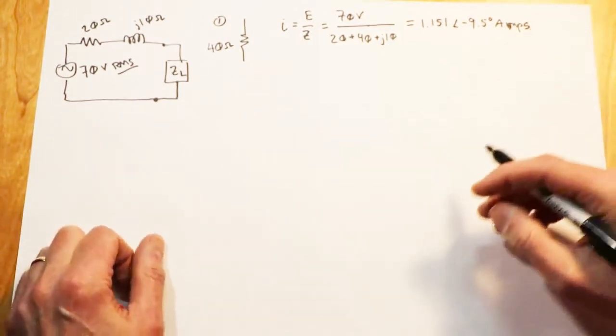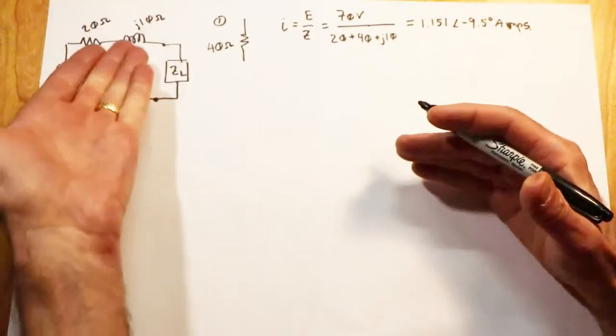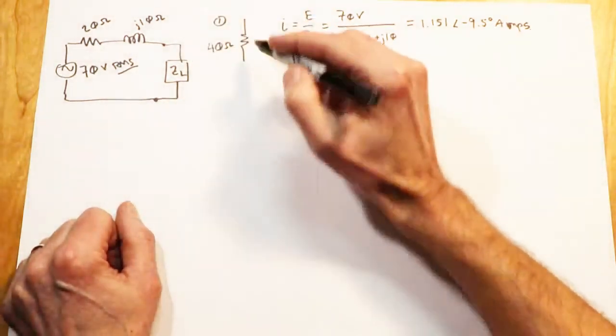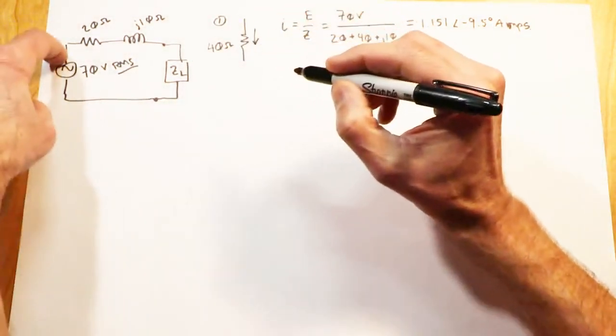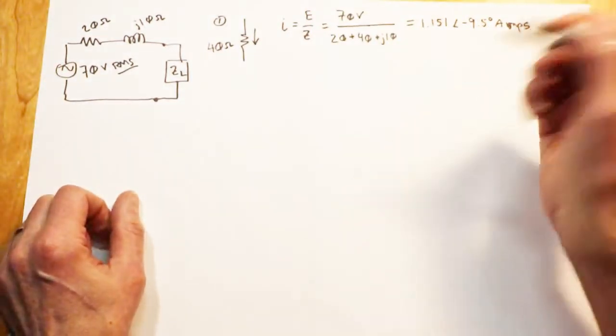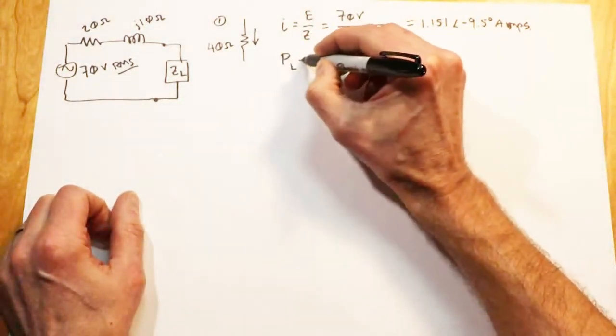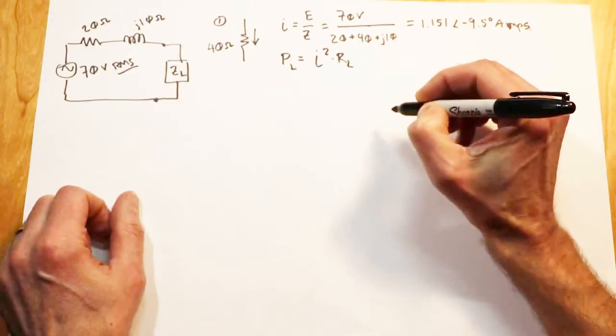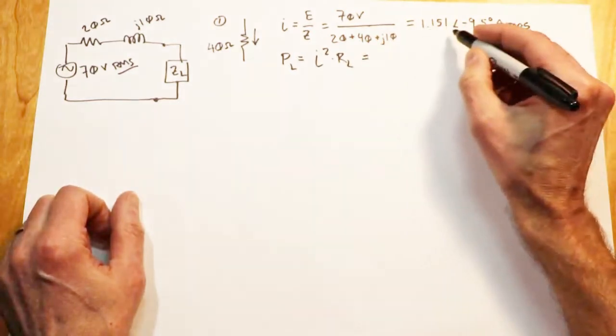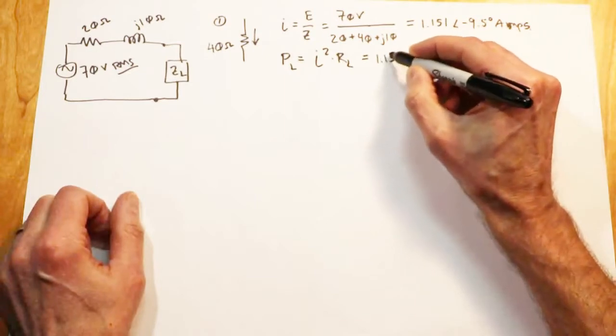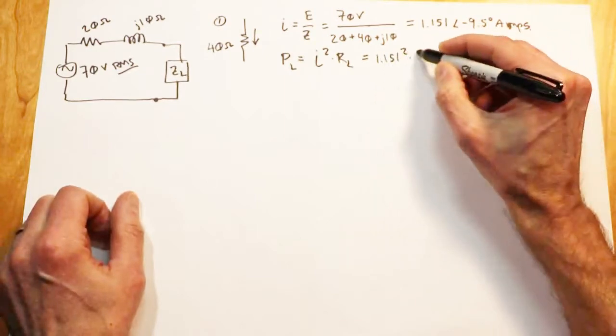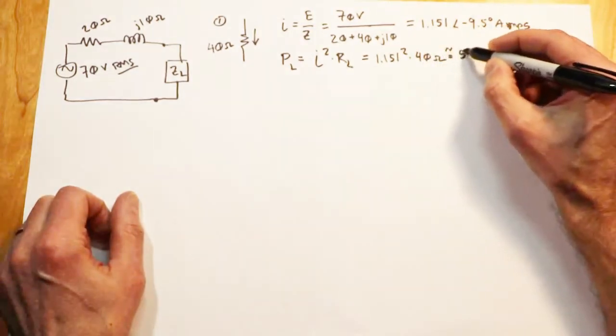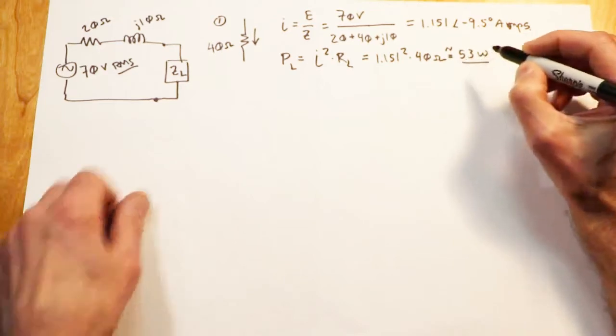So I'm just drawing these out in rectangular form, basically keeping the reals with the reals. And when we do our math on this, the current will work out to 1.51 amps at an angle of negative 0.5 degrees. Slight negative angle would make sense because the circuit does have some inductive reactance in it. Now, take that current, that current is going to pass through our load. So with a positive polarity here, we're going to have current going like this. I can just use the power law here. Power in the load will simply be I squared times R load. 40 ohms. And we will come up with approximately 53 watts.